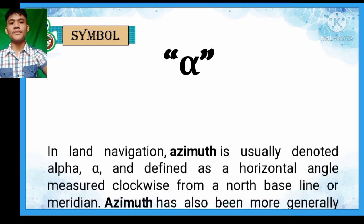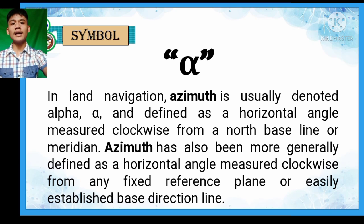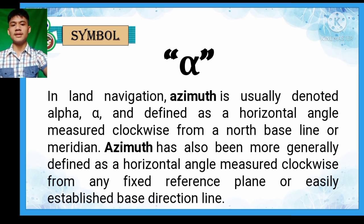This is the symbol used for denoting azimuth — it is called alpha. In land navigation, azimuth is usually denoted by the alpha symbol and defined as the horizontal angle measured clockwise from a north baseline or meridian. Azimuth has also been generally defined as the horizontal angle measured clockwise from any fixed reference plane or any established baseline direction.